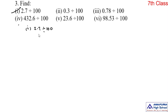To divide any decimal number by 100, shift the digits in the decimal number to the left as many places as there are zeros over 1. Here, we are dividing by 100. Over 1, how many zeros are there? In 100, two zeros are there.